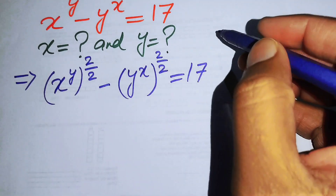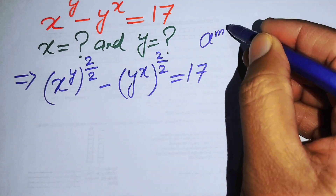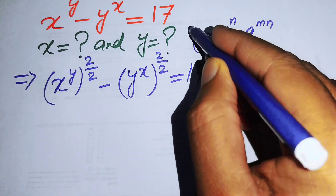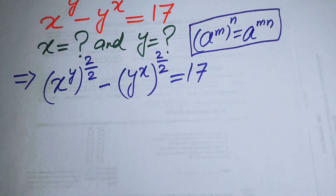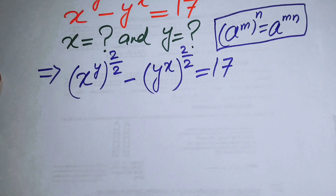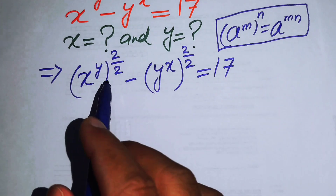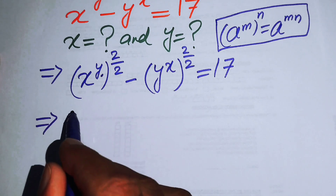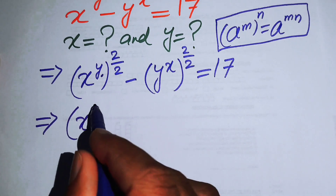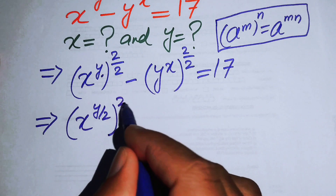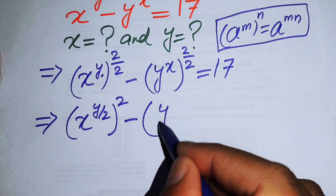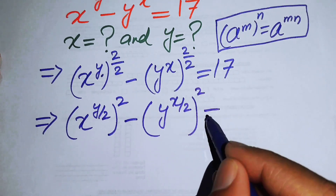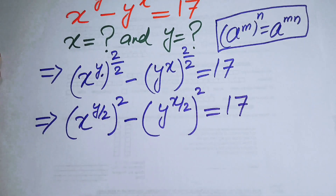Now we use the exponential law: a to the power of m to the power of n equals a to the power of m times n. Applying this law, we multiply the exponents and rewrite the expression as x to the power of y over 2, whole squared, minus y to the power of x over 2, whole squared, equals 17.